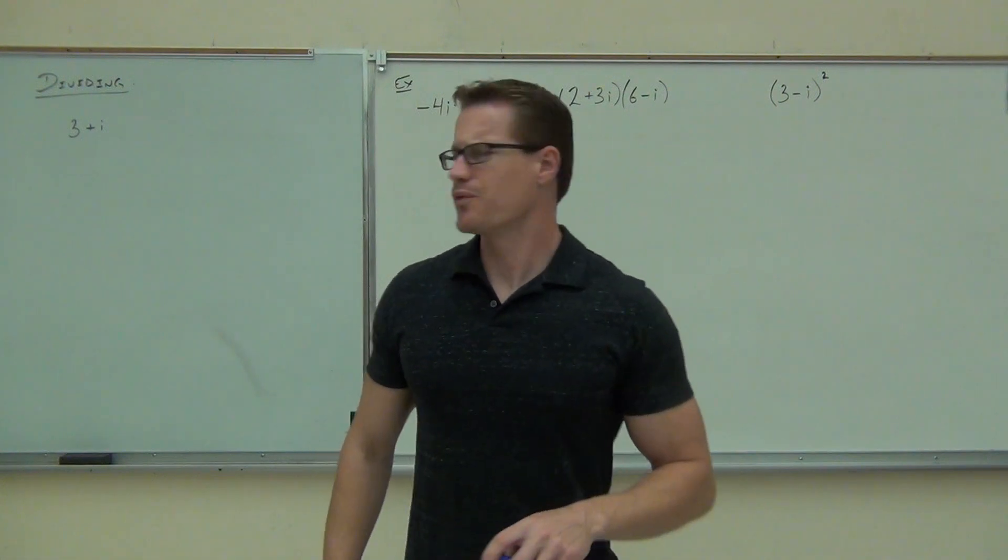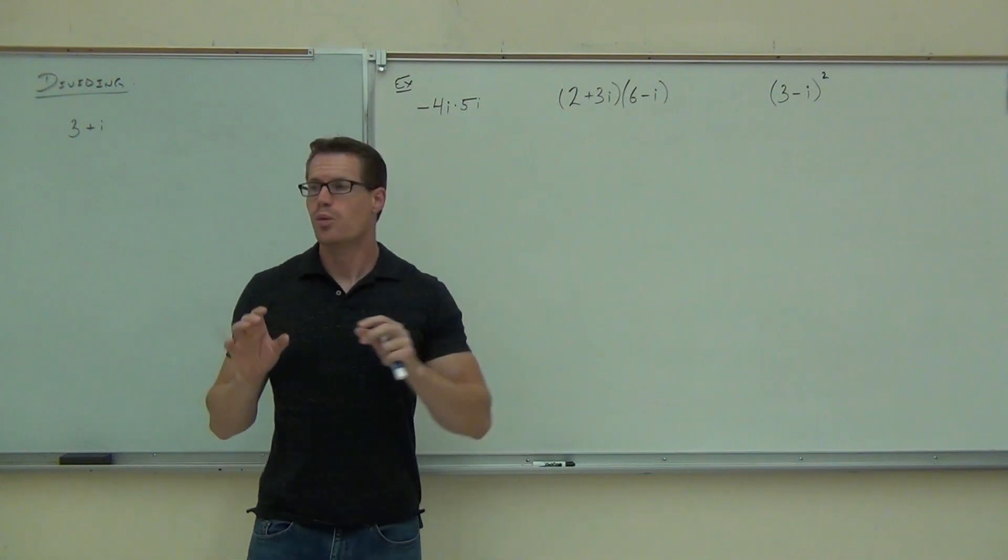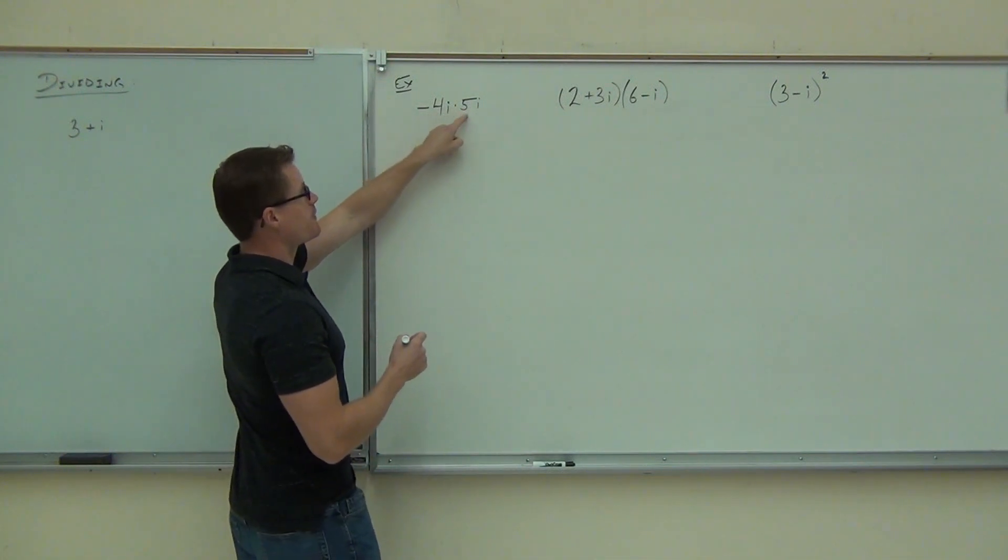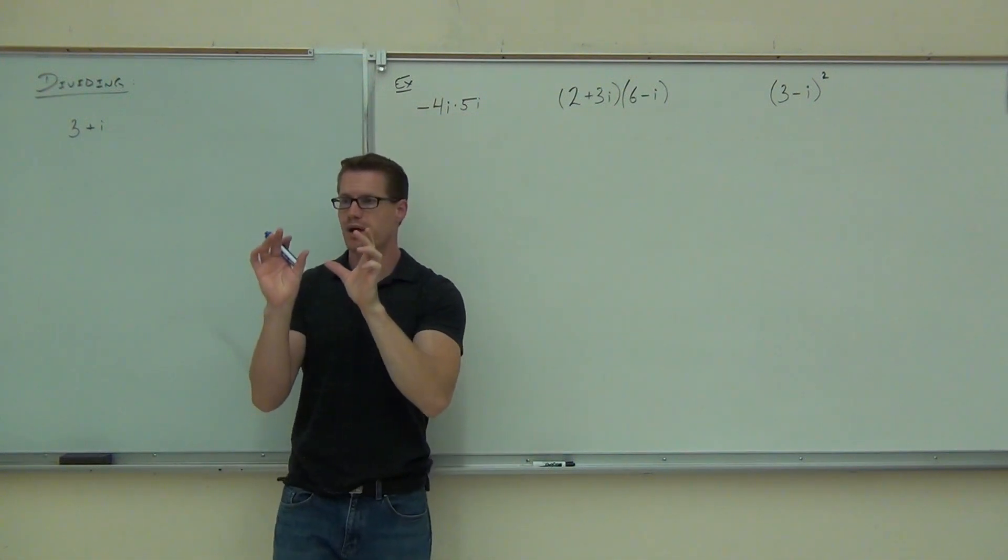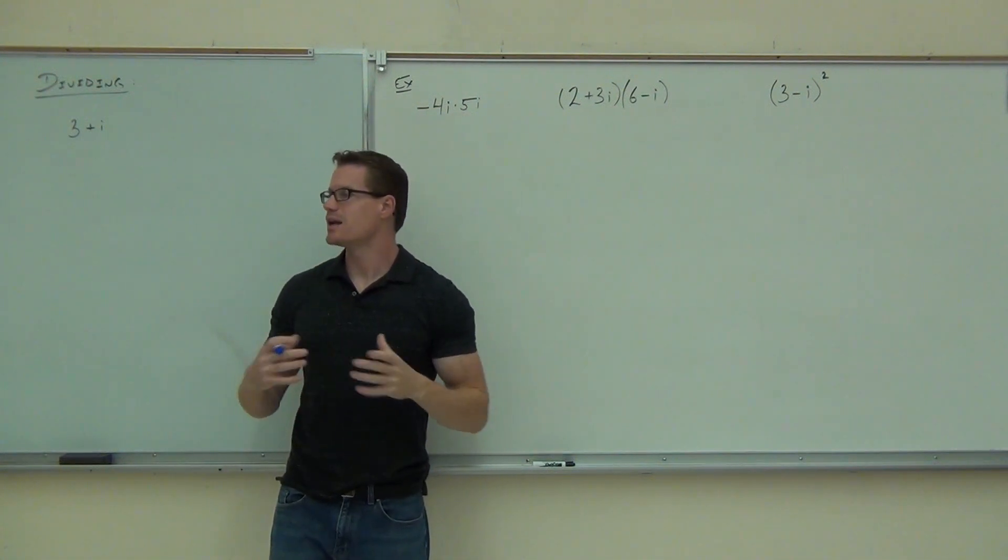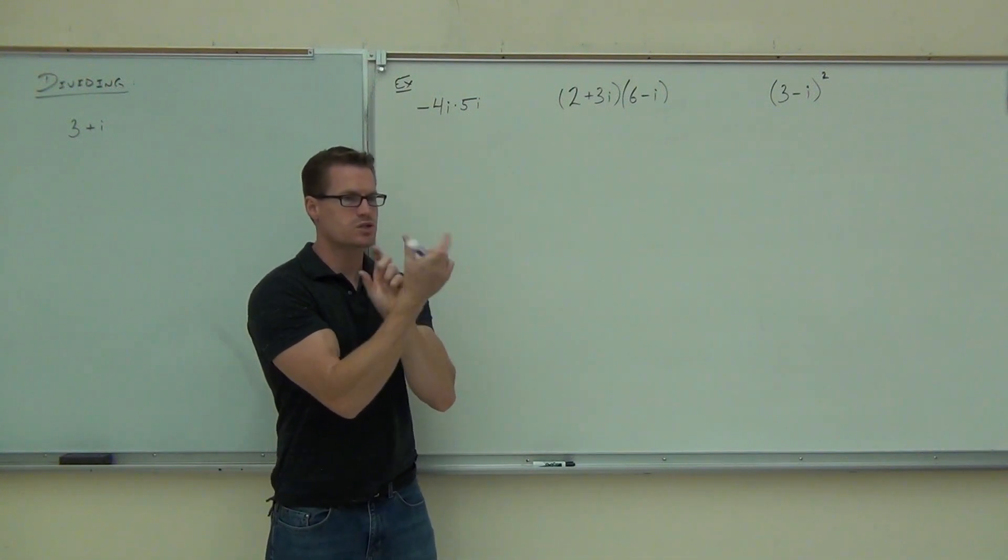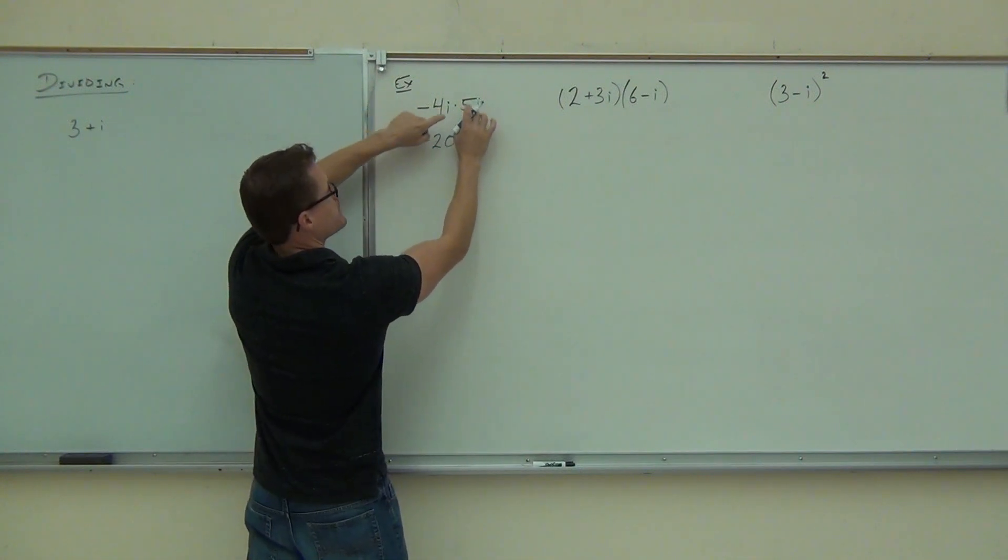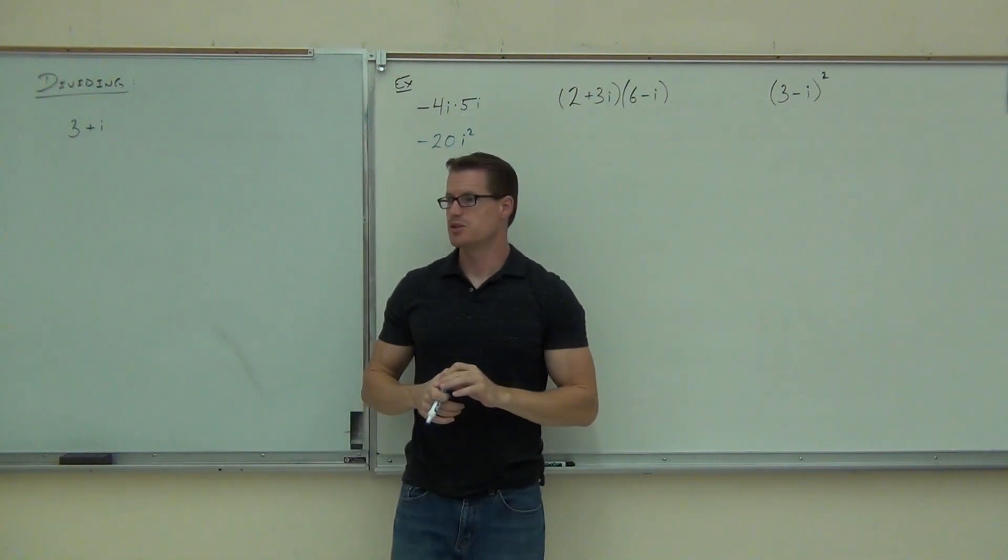Let's look at the first example. We've got negative 4i times 5i. The first thing we're going to do, instead of doing this in our head, we're going to write out exactly what we have when we multiply. So negative 4i times 5i, I can multiply those numbers together, and since I'm multiplying, I can also multiply the i's together and get i squared. I know that we do the 4 times the 5, it's negative 20. I do the i times the i and I get i squared. Did you get that far? Yes. Did you leave it? No.